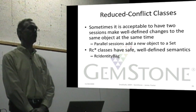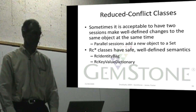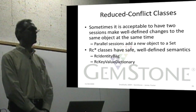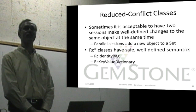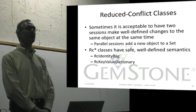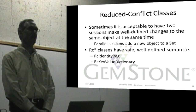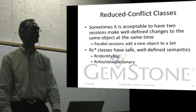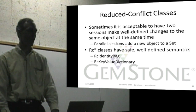The nature of bags is that they can hold multiple references to the same object. A key-value dictionary allows two different sessions to add keys or modify the value of different keys of the dictionary. You would get a conflict if two sessions attempted to modify the same key, but as long as they're on separate keys, then parallel modifications are acceptable.